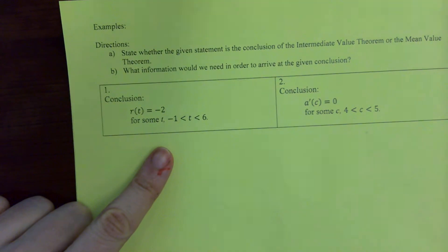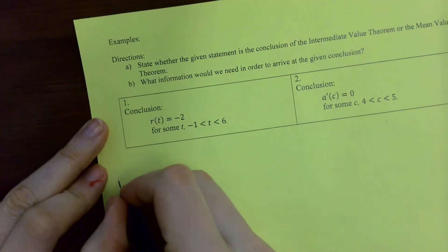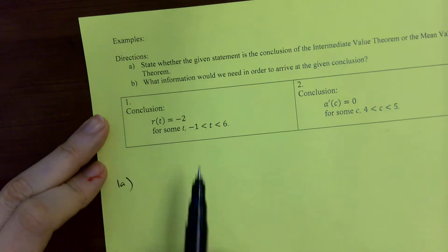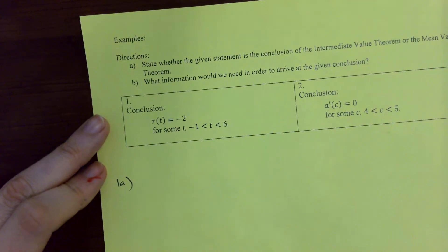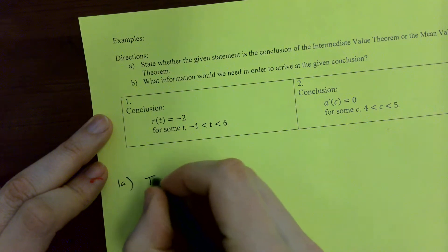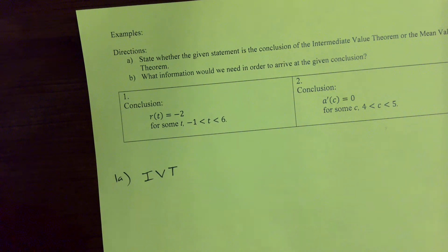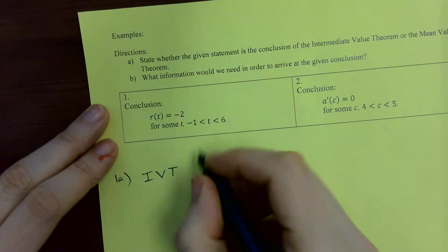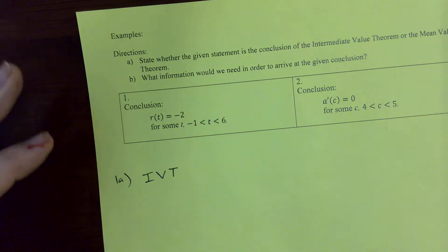Number one: the conclusion needs to be that R of T equals negative two for some T between negative one and six. Well, if it says the function value itself — if the function itself achieves a certain value, not its derivative — then that is the IVT, the intermediate value theorem.